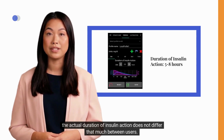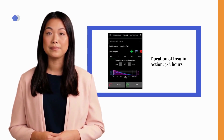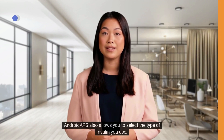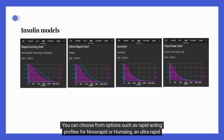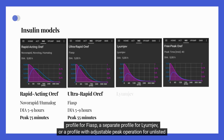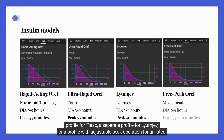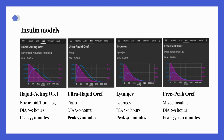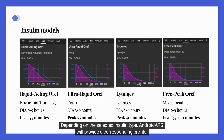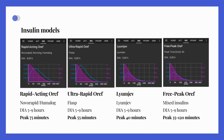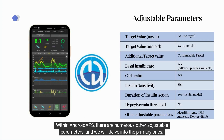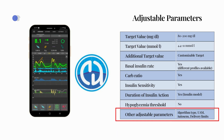Android APS allows you to select the type of insulin you use, including rapid-acting profiles for NovoRapid or Humalog, an ultra-rapid profile for Fiasp, a separate profile for LyumJev, or a profile with adjustable peak operation for unlisted insulin or mixtures. Depending on the selected insulin type, Android APS will provide a corresponding profile. There are numerous other adjustable parameters, including algorithm type, unannounced meal function, AutoSense, and delivery limits.